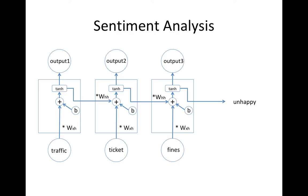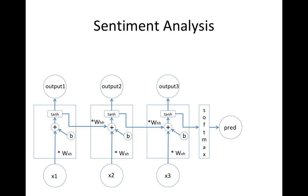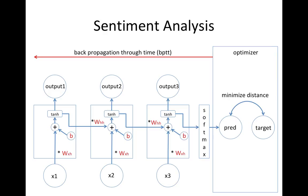You might be interested in how sentiment analysis works with RNN. For sentiment analysis, we only use the final state where all combinations of the input sequence are calculated. For example, you can see the final state is 'unhappy' when the input sequence was 'traffic ticket fines.' Similar words but different context — like 'traffic is fine' — and the last state is 'happy.' Distinguishing sentiment is done by a softmax layer after the last state to provide probabilities for every possible sentiment. During training, just like POS tagging training, we use BPTT and update WXH, WHH, and bias.